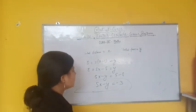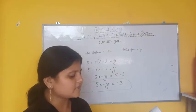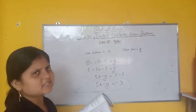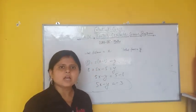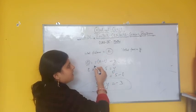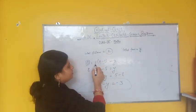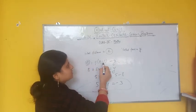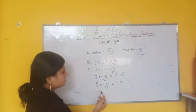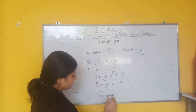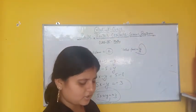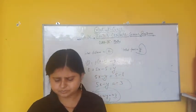एक बार और देखते हैं: पहले kilometer का fare 8 रुपीज है। जो उसके बाद जितने भी kilometer चलते जाएंगे, per kilometer 5 रुपीज लगेगा। Total distance x है, तो बचा हुआ (x−1) है और per kilometer into 5 करेंगे। 8 plus 5(x−1) equals y क्योंकि total fare y है। Solving करने पर equation मिलती है: 5x − y = −3।